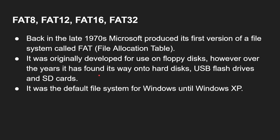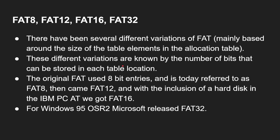FAT was the default file system for Windows up until Windows XP when NTFS took over. There have been several different variations of FAT based around the size of the table — because it's a file allocation table that holds information about the files. That's FAT8, FAT12, FAT16, and FAT32. The original FAT used 8-bit entries and is today referred to as FAT8. Then came FAT12, and when we had our first hard drives in the IBM PC AT, we got FAT16. And from Windows 95 release 2, we got FAT32.